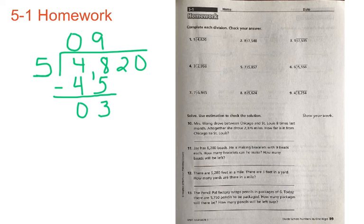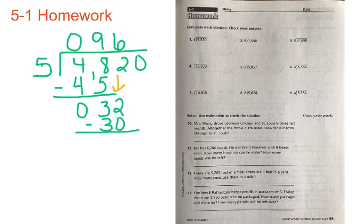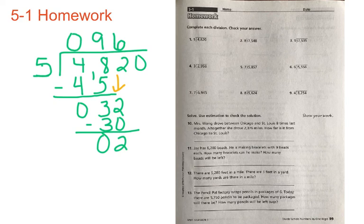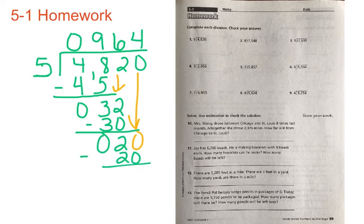Now we bring down our next number, the 2. How many times can 5 go into 32? Six times, because 5 times 6 is equal to 30. We line it up and subtract: 2 minus 0 is 2, and 3 minus 3 is 0. Our remainder here is 2 — less than our divisor of 5, so we're good. We bring down the 0. How many times can 5 go into 20? Four times, because 5 times 4 is 20. And 20 minus 20 is 0. So your answer is 964 with no remainder.